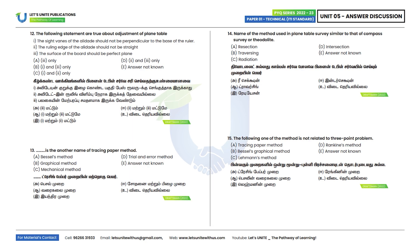Twelfth question: Which of the following statements are true about the adjustment of a plane table? The sight vanes of the alidade should be perpendicular; the ruling edge of the alidade should be straight; and the surface of the board should be perfect. Statement 3 only is correct. Option A is the correct answer.